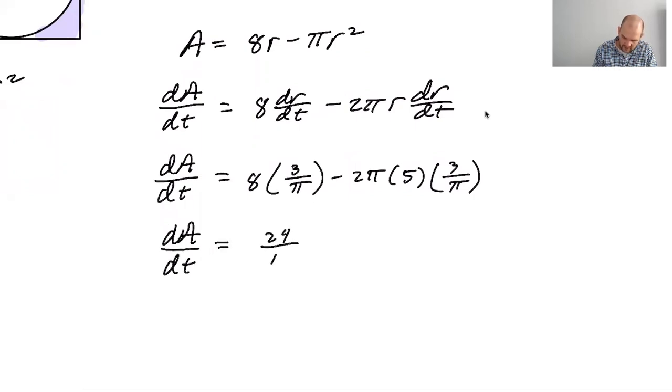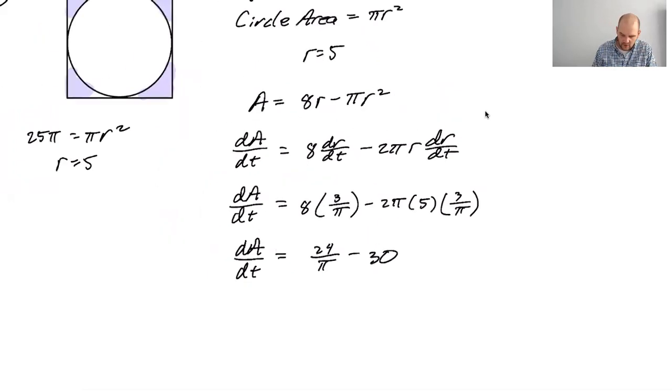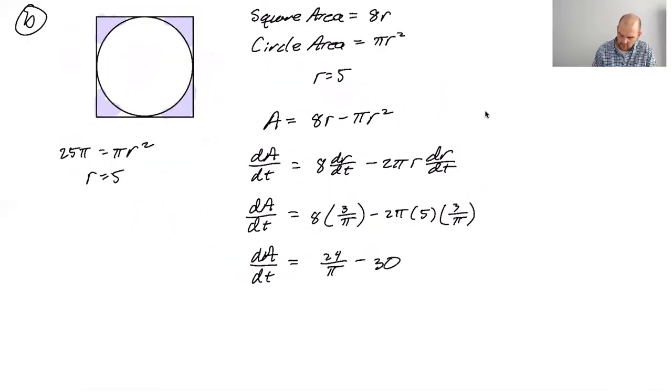24 over π minus 30, just straight up 30 because the π is cancelled. That's weird. Minus 30. Really? 15 times two is 30. Okay. 24 over π minus 30. That's not increasing though. Right? Because 30 has got to be bigger. So is there a problem?